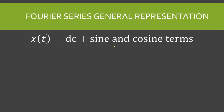The Fourier series is generally represented with a DC value and then sine and cosine terms. The DC or average value can many times be found by visual inspection. For example, if we have a signal with time on the x-axis and amplitude on the y-axis, where the amplitude is 1 and it varies from 0 to one time period.